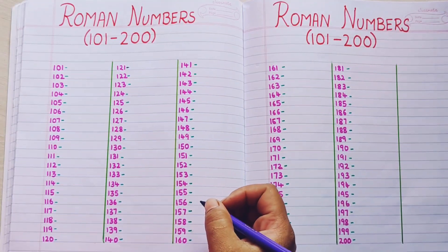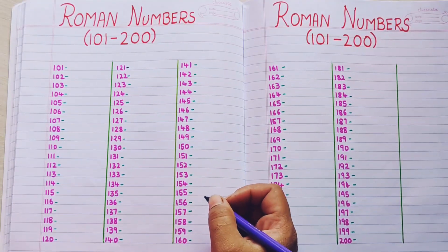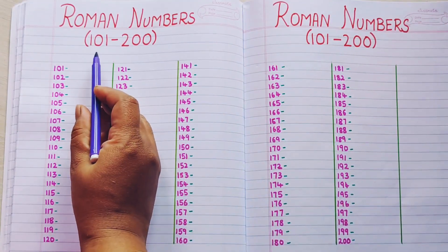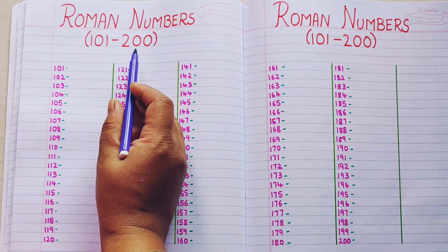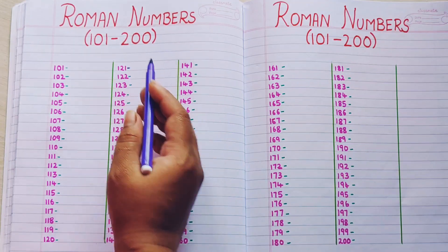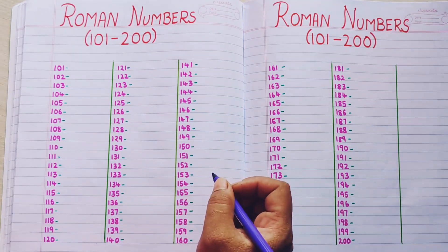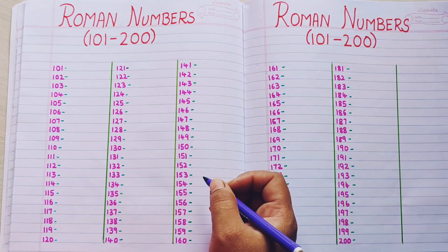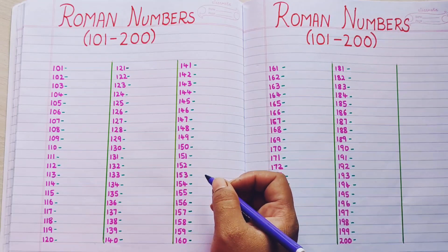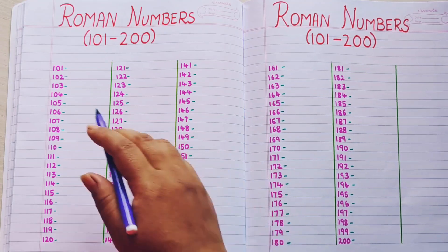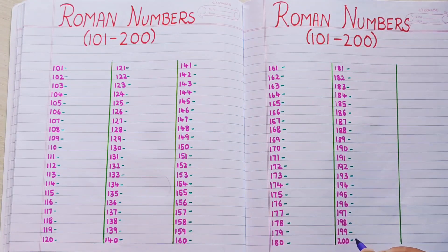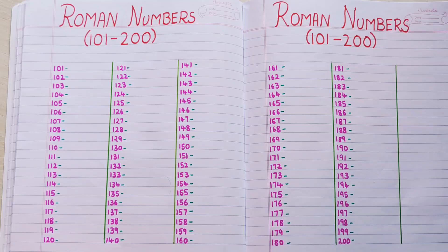Hi everyone, welcome back. Today we are going to learn the writing of Roman numbers from 101 to 200. In the previous video, we have already seen the symbols that are used in Roman numbers. So today let us learn the writing from 101 to 200. Let's begin.